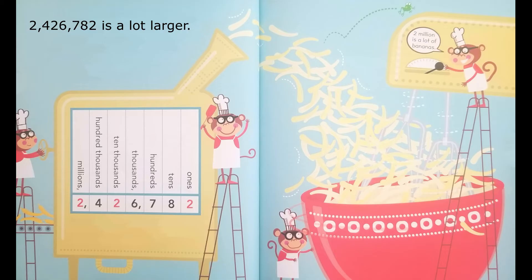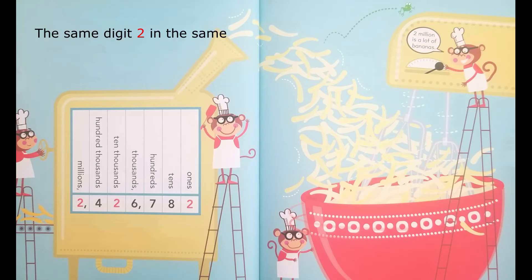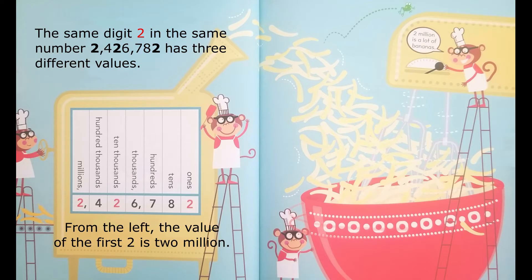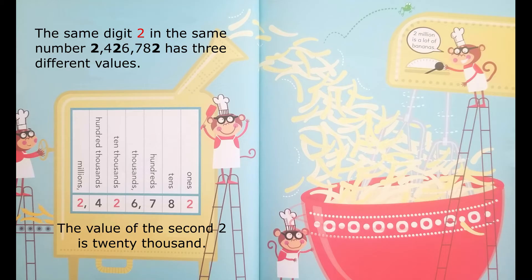The number 2,426,782 contains the digit two three times, and each two has a different value. From the left, the value of the first two is two million. The value of the second two is twenty thousand. The value of the third two is two.